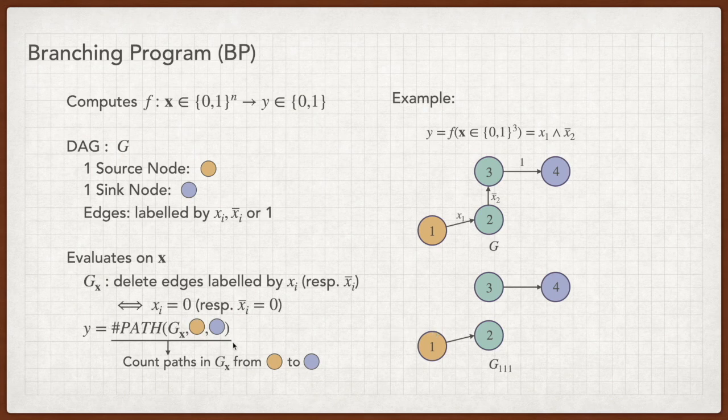Second, we count the paths from the source node to the sync node. Since we set the DAG carefully, the number of paths is either 0 or 1. For example, on input 1, 1, 1, the BP outputs 0 as there are no paths from the source node to the sync node.